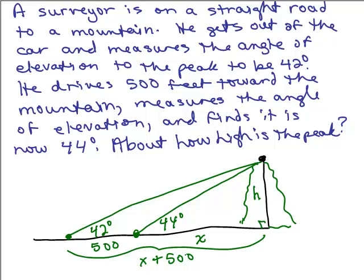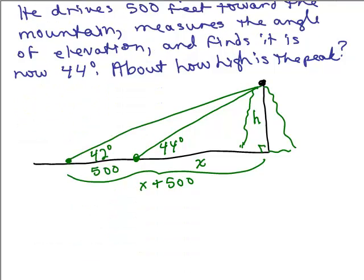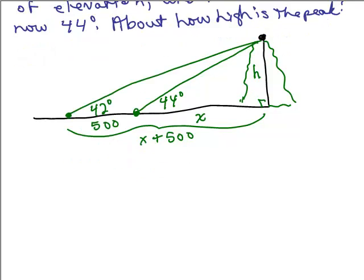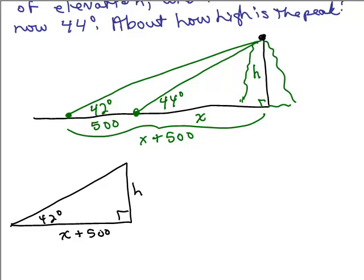Now what we need to find out is the height of the peak. I'm going to call that H for the height of the peak. There's another distance here that we don't know, so I'm going to call that X. So we really have two right triangles here, so I'm going to look at those separately.